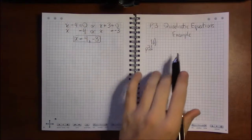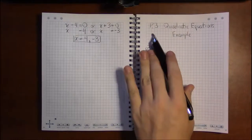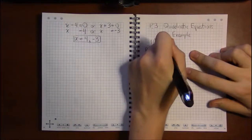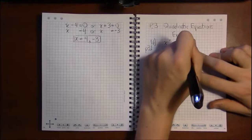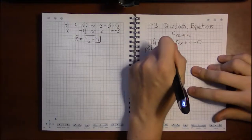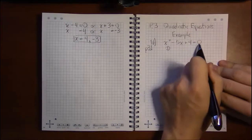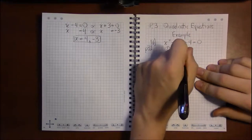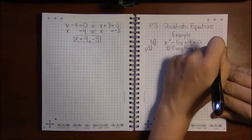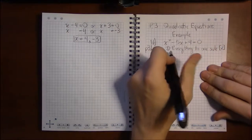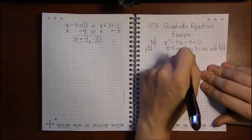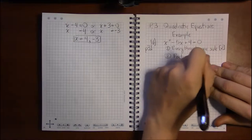Let's do more examples of quadratic equations. Looking at problem 16 on page 31: x squared minus 5x plus 4 equals 0. Our first step is to get everything on one side, but that's already done — everything's on the left-hand side. I'll write that down and put a check mark to indicate it's already done. I can solve this by factoring, quadratic formula, or completing the square.